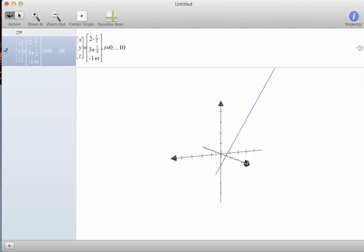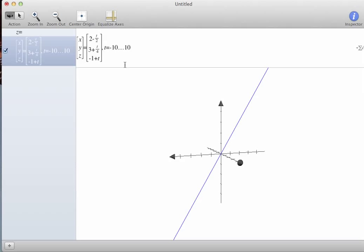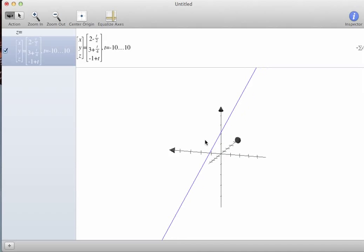Of course, I'm only getting it for T greater than or equal to 0. So if I click back up here and just arrow, I can make it negative 10 to 10. And I get that.